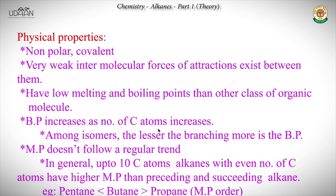Now if you take the boiling point, it increases as the number of carbon atoms increases. Now if you take isomers, lesser is the branching, more is the boiling point. This appears interesting - why could lesser branching lead to a greater boiling point? Let's try and understand what the boiling point is dependent upon.